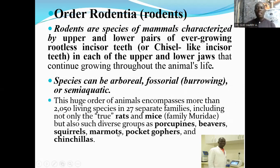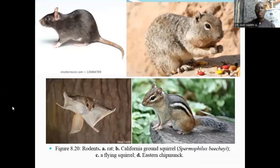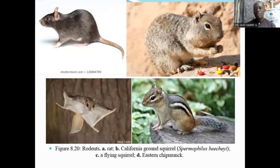This huge order encompasses more than 2,050 living species in seven separate families, including not only the true rats and mice, but also such diverse groups as porcupines, beavers, squirrels, pocket gophers, and chinchillas. Here are various species of rodents: a rat, the California ground squirrel, the flying squirrel, and the eastern chipmunk — all examples of mammals in the order Rodentia, subclass Eutheria.